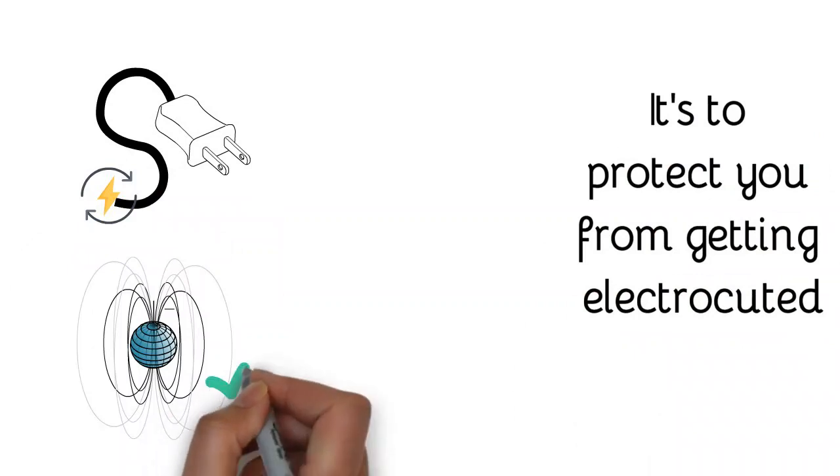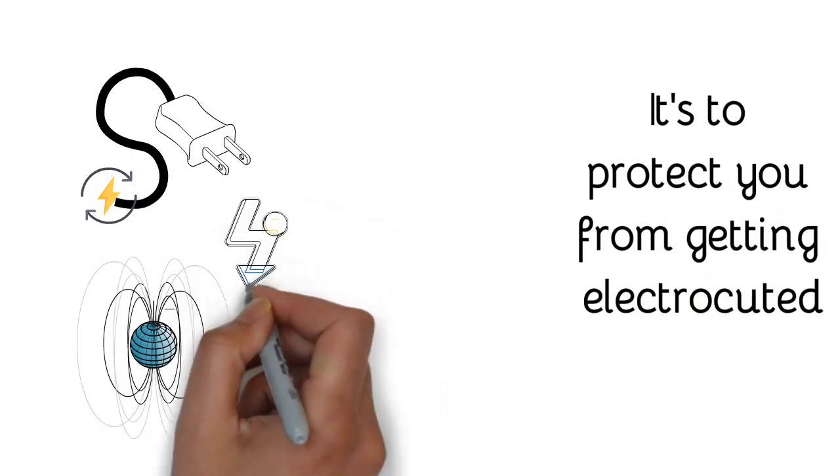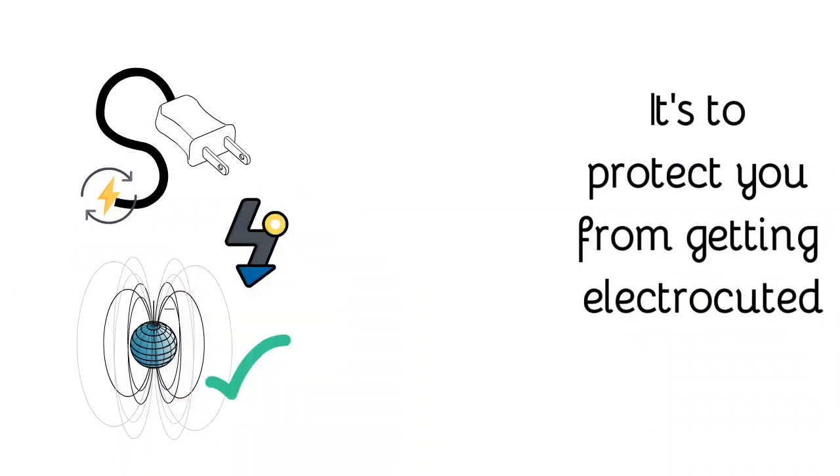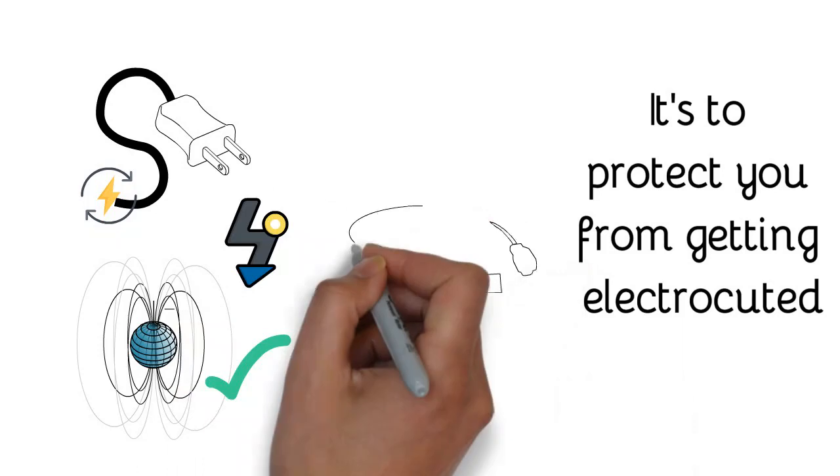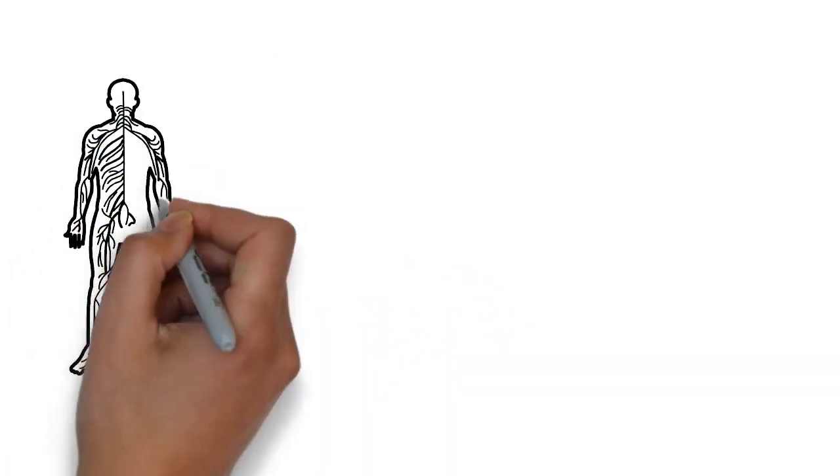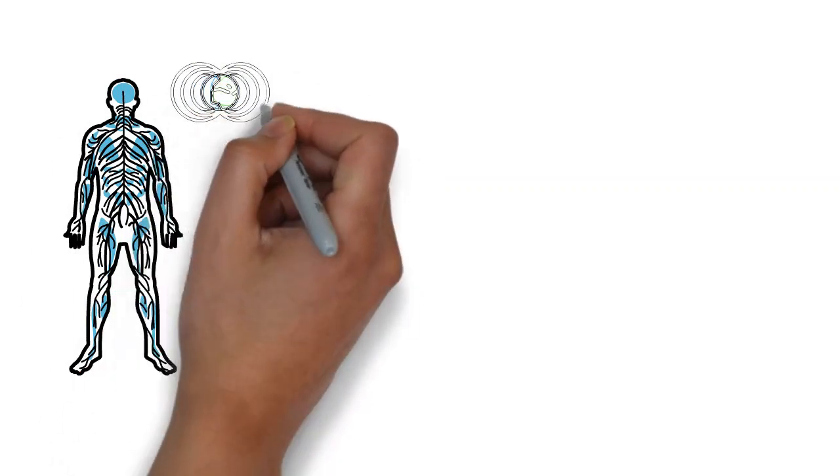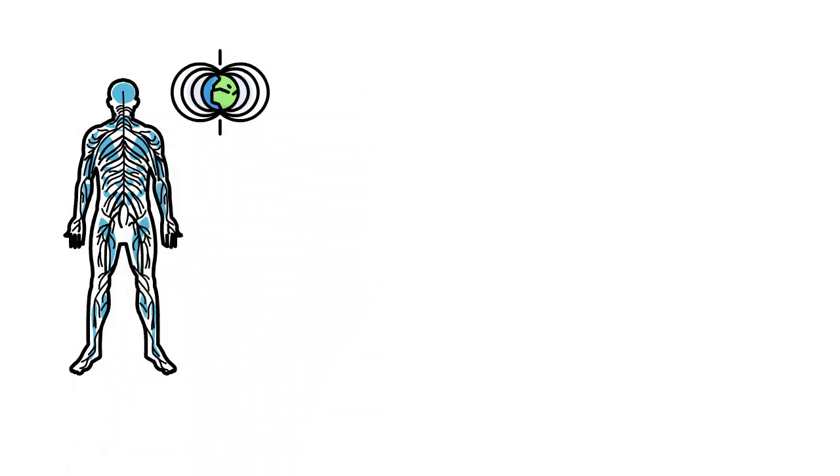As the current flows down the wire, it is continuously producing a magnetic field. That magnetic field, we apply it. We run current through wires into what we call applicators or coils and we place them on the body. That creates a concentrated magnetic field that's used to go into the body to do healing work.